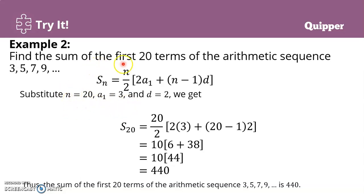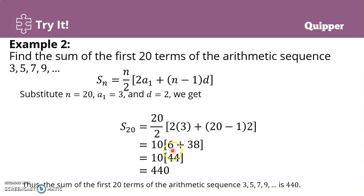Substituting for the first 20 terms: S sub 20 equals 20 over 2 times (2 times 3 plus (20 minus 1) times 2). Solving this: 2 times 3 is 6, 20 minus 1 is 19, and 19 times 2 is 38. So 6 plus 38 is 44. Then 20 over 2 is 10, and 10 times 44 gives 440. Therefore, the sum of the first 20 terms of the arithmetic sequence 3, 5, 7, 9, and so on is 440.